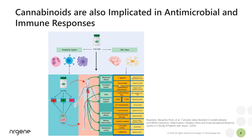Different receptors work in different organs, and therefore you have different responses in each tissue type. So the study of the interactions is complex, takes time, and is quite expensive. But gradually mankind is doing the science — we're studying the interactions for cannabis, and as we move on, more and more literature is being published showing specific interactions in model systems and whole plant systems given to clinical trials.